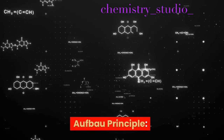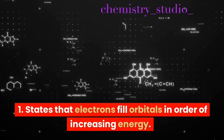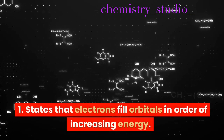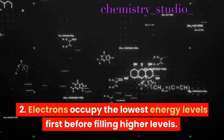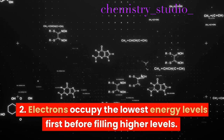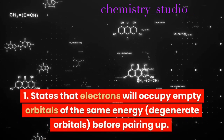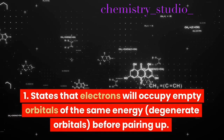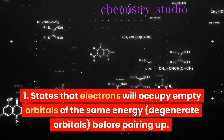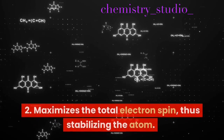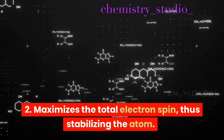Aufbau Principle: states that electrons fill orbitals in order of increasing energy; electrons occupy the lowest energy levels first before filling higher levels. Hund's Rule: states that electrons will occupy empty orbitals of the same energy (degenerate orbitals) before pairing up, which maximizes the total electron spin, thus stabilizing the atom.